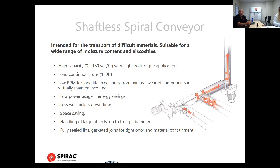Highlights of SPIRAC shaftless conveyors: high capacity — that's what shaftless spirals or conveyors are all about. Long runs without the need of intermediate or hanger bearings. Low RPM, which extends the life of the wear items. Low power, meaning less wear. Space saving — we can actually handle some pretty large objects. And we have fully sealed units, which aids in odor control and material containment.